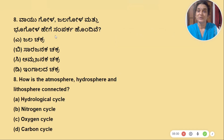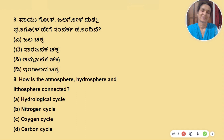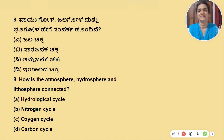We have many different types of cycles: Jalachakra (water cycle), Sarajanak Chakra (nitrogen cycle), Amalajanak Chakra, and Ingalad Chakra (carbon cycle). How are the atmosphere, hydrosphere and lithosphere connected? They are all connected through these cycles.